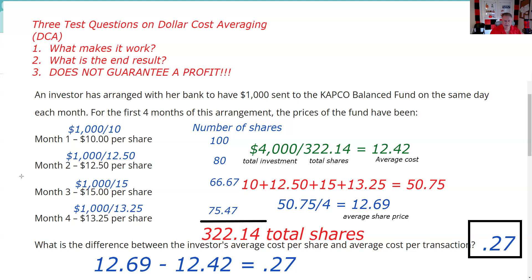It's not so much about the math as it is about knowing the test questions on dollar cost averaging. To review: what makes it work — fixed dollars invested regularly, in this case a thousand dollars a month. What's the end result — the average cost ($12.42 in this example) will always be lower than the average share price ($12.69 in this example). And it does not guarantee a profit.